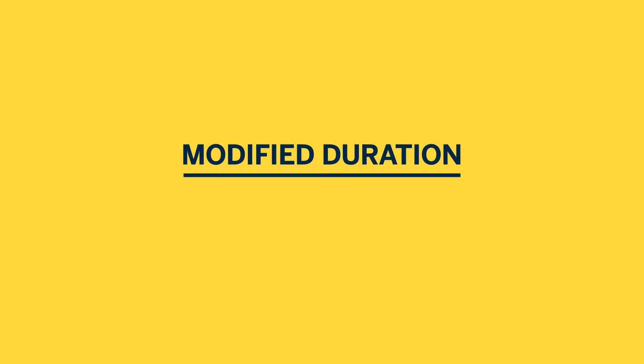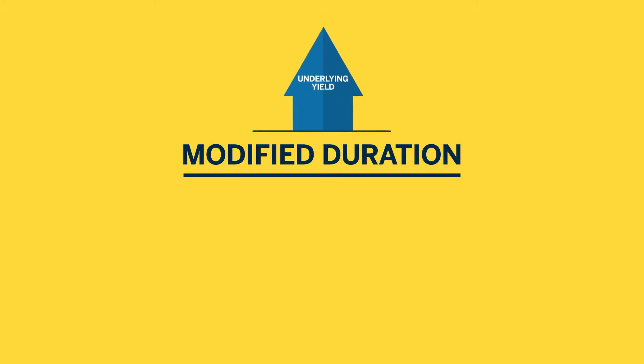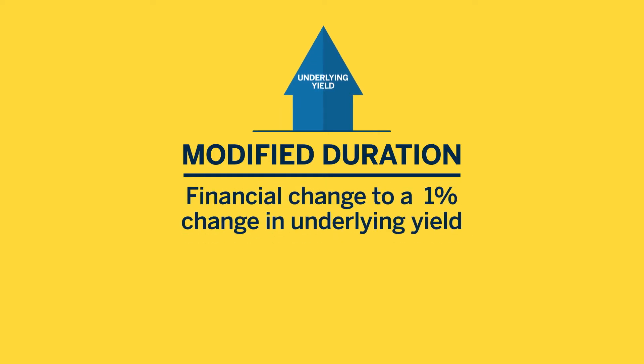The other factor used to measure risk is modified duration. Modified duration represents the financial change as a percentage gain or loss to a 1% change in underlying yield.